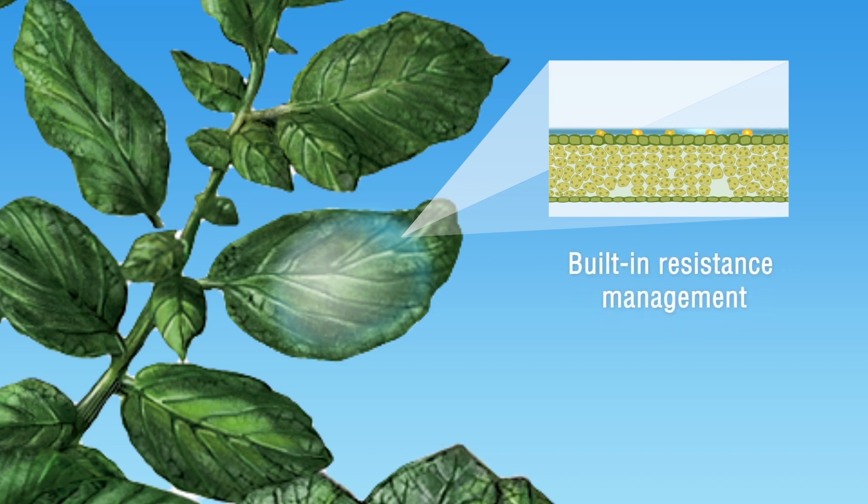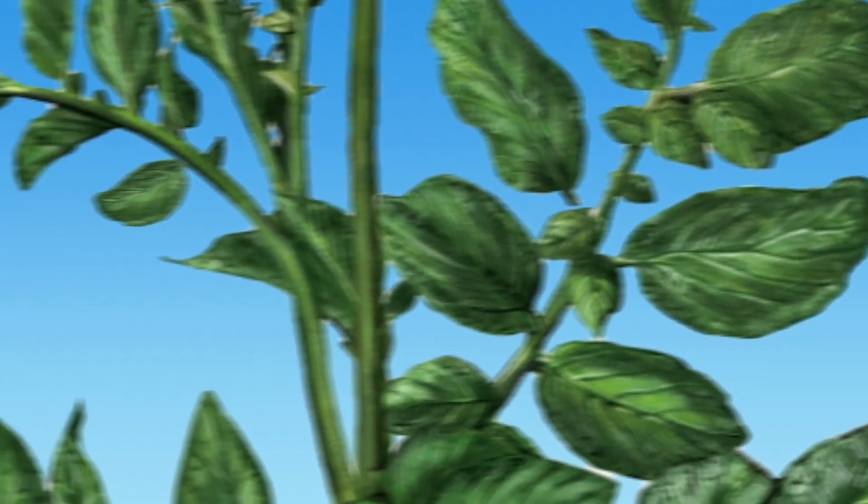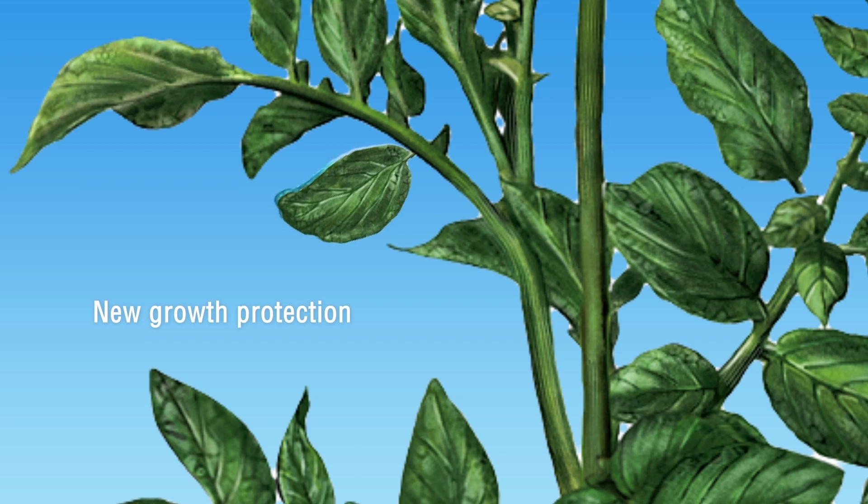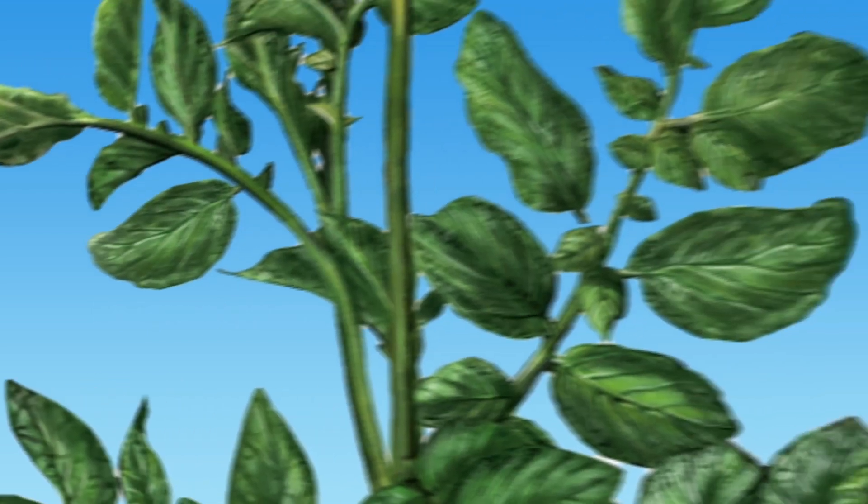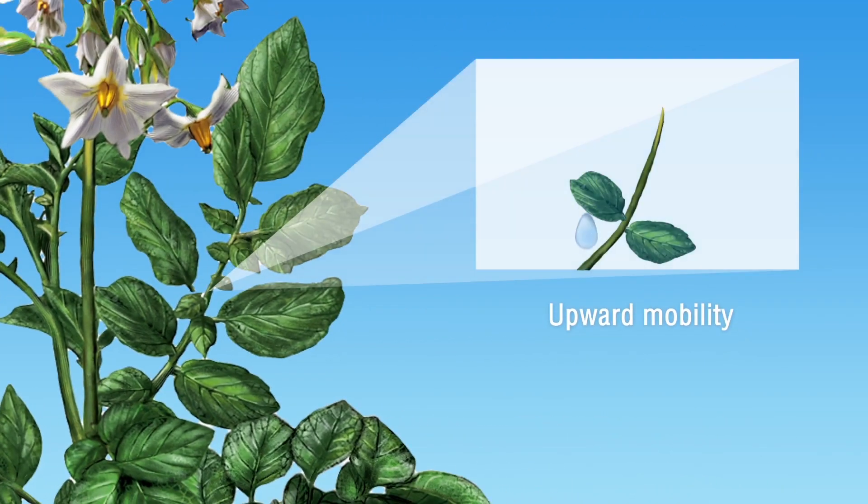This combined effect means that Infinito comes with a built-in resistance management effect. Fluopicolite mobility also means that Infinito provides grown leaves with complete protection as well. When fluopicolite is applied to the stem, it moves up into the plant to protect new growing points.